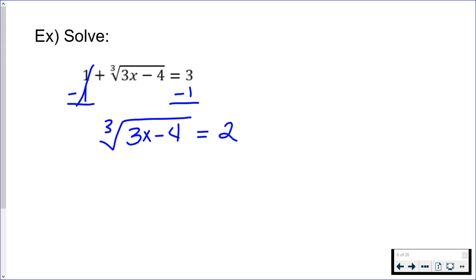Same thing here, but with a cube root, the opposite of that would be cubing it. So to get rid of this radical, I'm going to raise both sides to the third power.